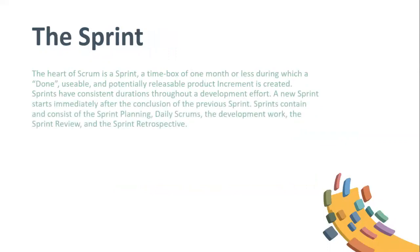The sprint: the heart of Scrum is a sprint, a time box of one month or less during which a done, usable, and potentially releasable product increment is created. Sprints have consistent durations throughout a development effort. A new sprint starts immediately after the conclusion of the previous sprint. Sprints contain and consist of the sprint planning, daily scrums, the development work, the sprint review, and the sprint retrospective.